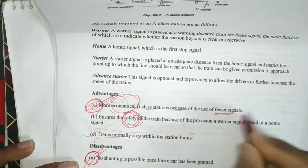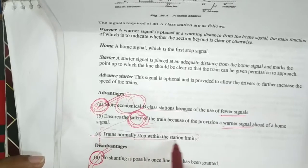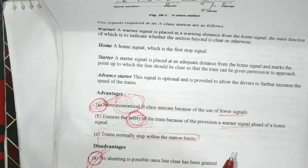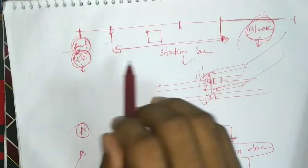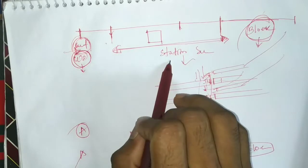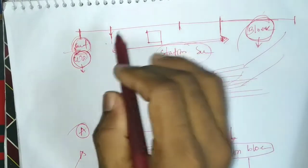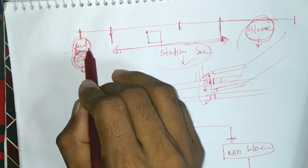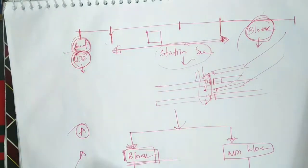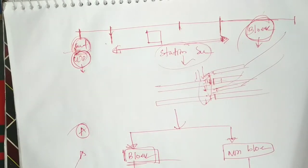However, it is not entirely secure. The train is normally stopped by station limit. The station limit applies here. We are talking about the block station. The train is normally stopped by station limit, but when the home signal is outside the station, it is a limited station. This is a one-class station.